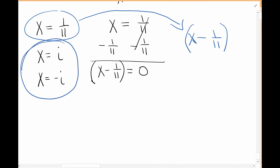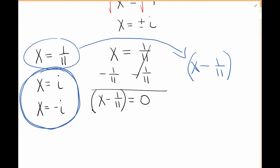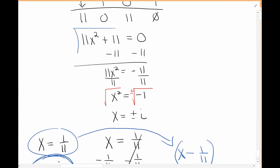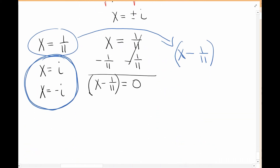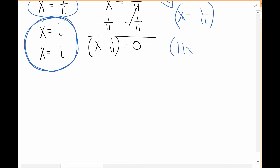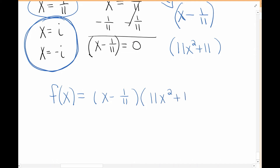For the complex solutions, you don't want to make factors directly out of those. If you get a complex zero, don't use it to find the factors. Instead, go back to the polynomial that those complex solutions came from — which is 11x squared plus 11. That's where x equals plus or minus i came from, so that polynomial is actually going to be the other factor you include.